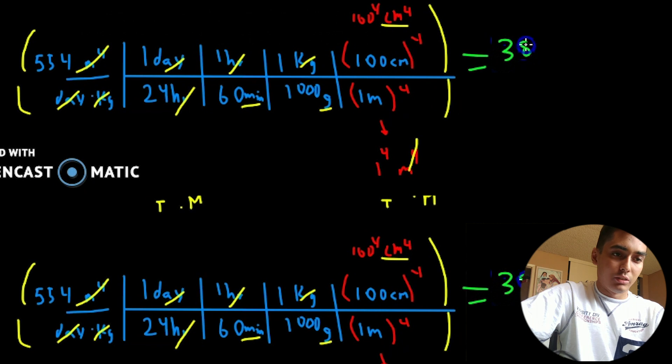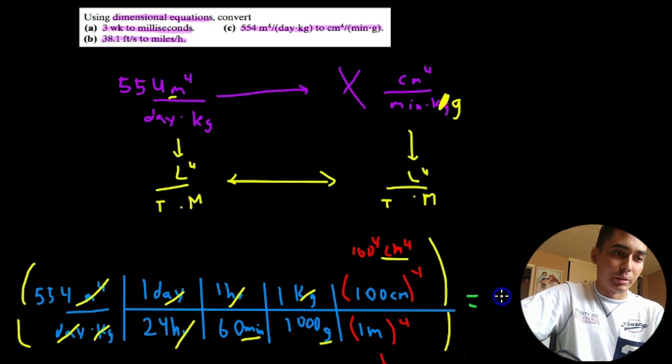And that gives us an answer of 38,472. So, 38,000, just round up, gives us an answer of about 38,000, which, of course, we want to get used to scientific notation, guys, it's very important. 3.8 times 10 to the 4th centimeters to the fourth power over minutes times grams.